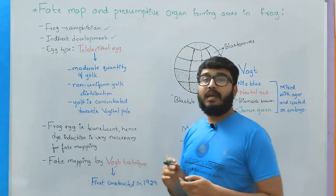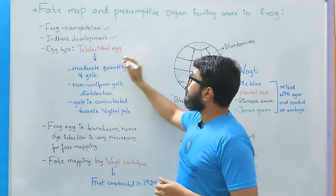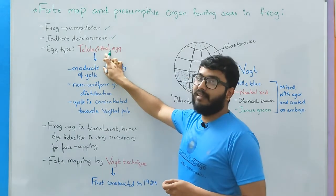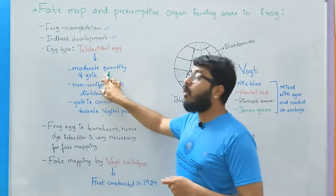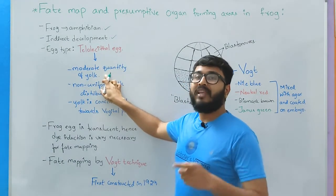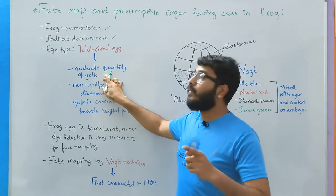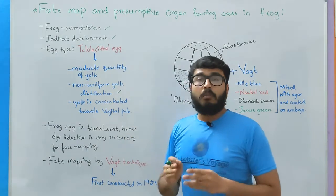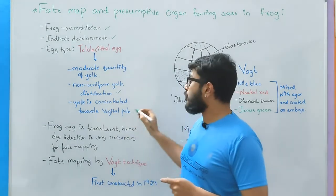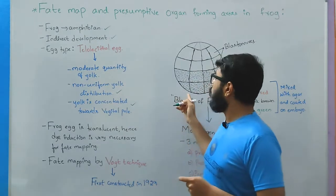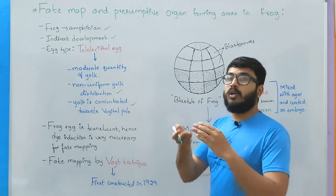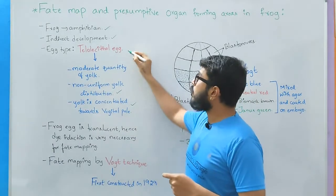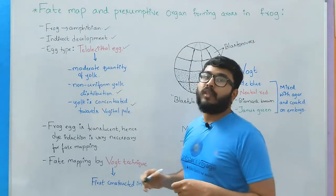Now looking into the egg type of the frog, it is telolecithal egg, that is it contains moderate quantity of yolk and yolk distribution is unequal or non-uniform, and most of the yolk content is distributed towards the vegetal pole of the egg, that is towards the lower base of the egg. Therefore it is called as telolecithal egg.